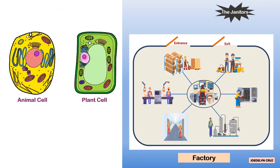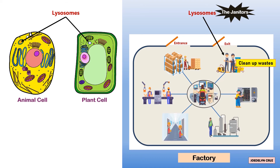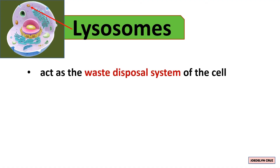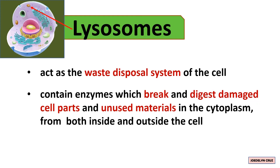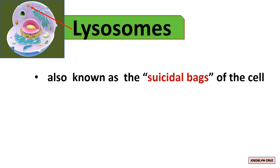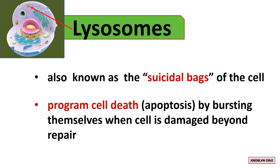In the factory, the janitors represent lysosomes. They clean up and break down waste in and around the factory. Lysosomes act as the waste disposal system of the cell. They contain enzymes which break down and digest damaged cell parts and unused materials in the cytoplasm from both inside and outside the cell. They also destroy invading viruses and bacteria. Lysosomes are also known as suicidal bags of the cell, as they program cell death — apoptosis — by bursting themselves when a cell is damaged beyond repair.